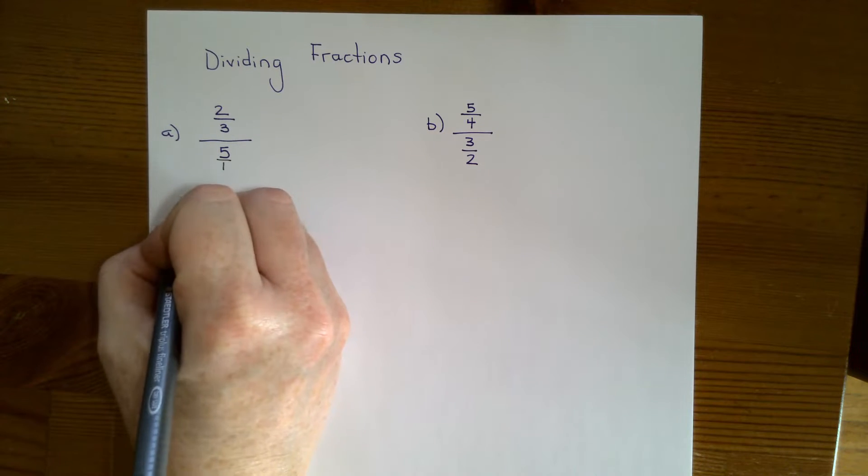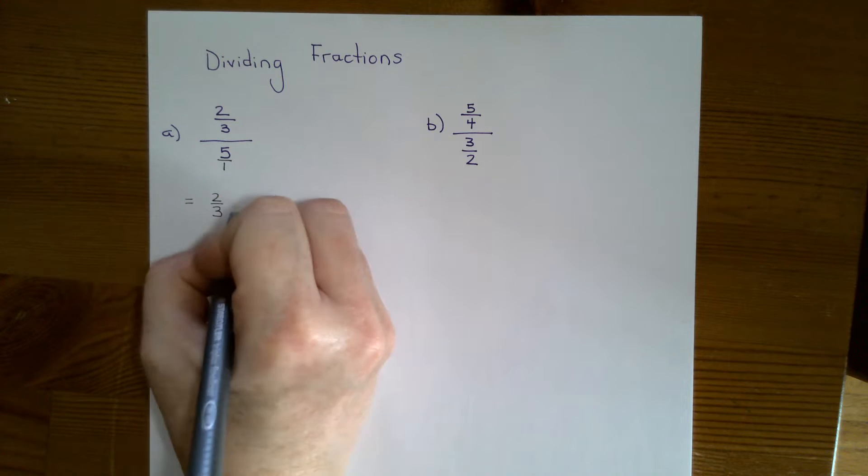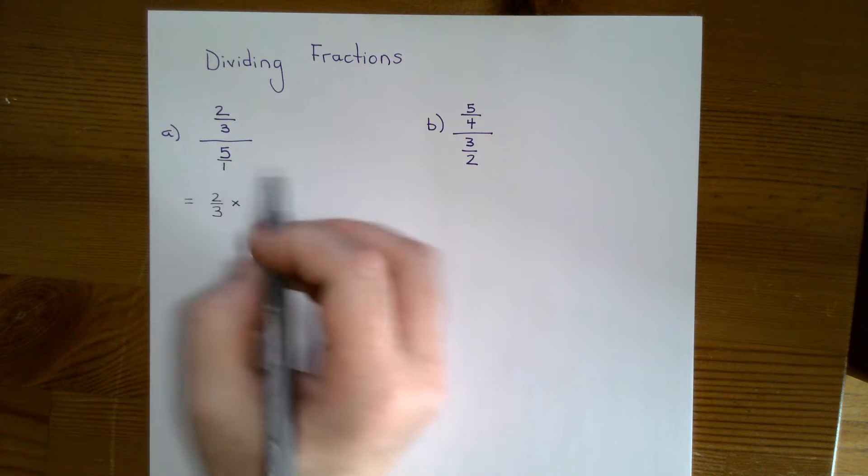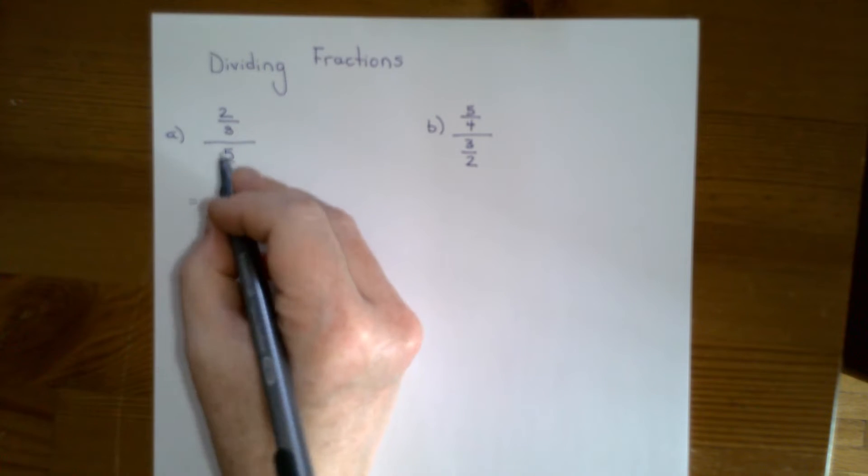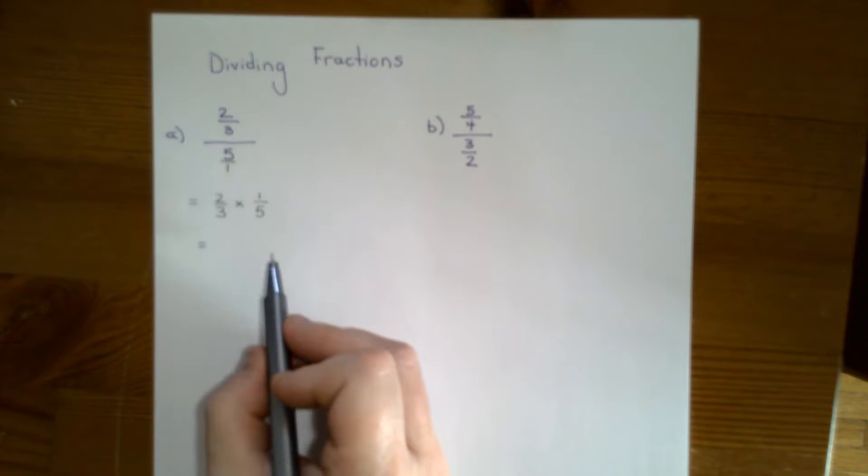Now we're going to multiply by the reciprocal. So we're going to do two thirds times one over five. The reciprocal just means that we flip the fraction. So we have two thirds times one fifth.